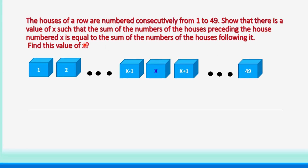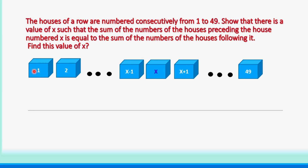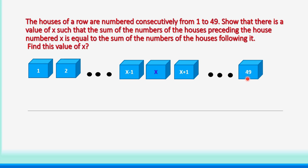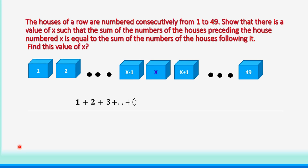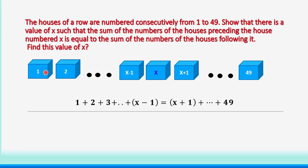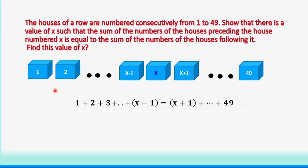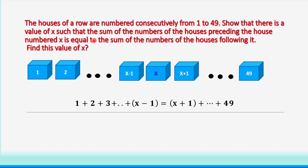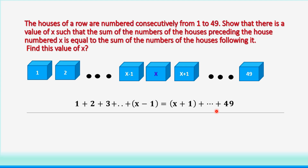There exists an x such that the sum of the numbers of houses preceding x — that is, 1 plus 2 plus ... plus (x−1) — equals the sum of the numbers of houses following x, which is (x+1) plus (x+2) plus ... plus 49. So our equation is: 1 + 2 + 3 + ... + (x−1) = (x+1) + ... + 49.